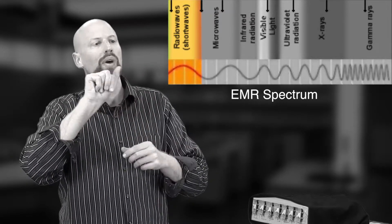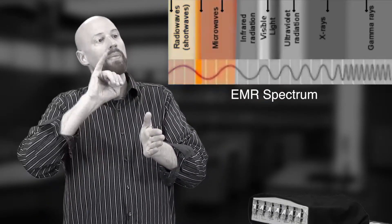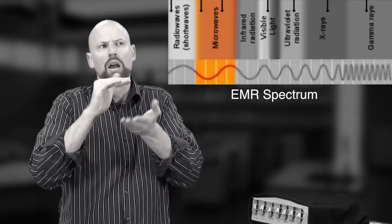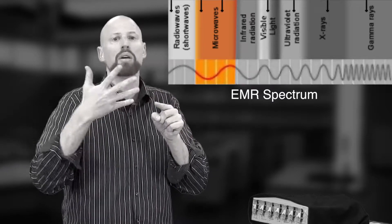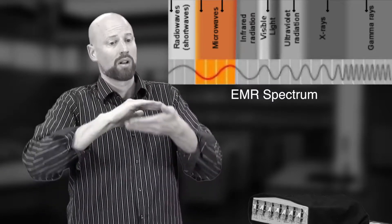And you might find this in, say, a radio. Whoa! What? Now, microwaves have a higher frequency and a shorter wavelength, and these might be in, say, cell phones or maybe Wi-Fi on your laptop.